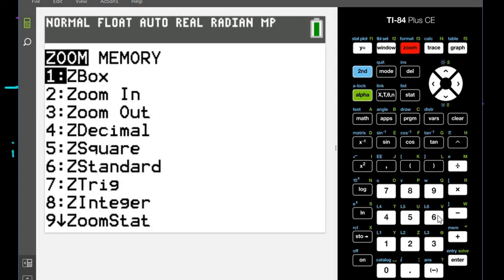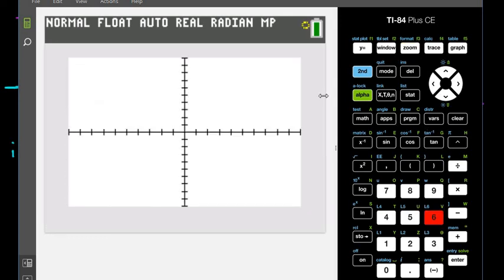Normally, if I just go to Zoom Standard, Zoom Standard will get it set back to the original. This is what it would have looked like had I not shown, so that's why I adjusted the y-axis.